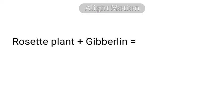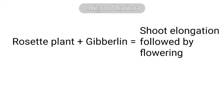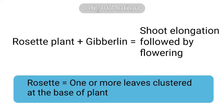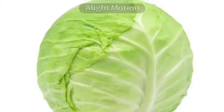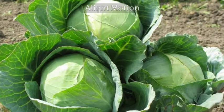The second important effect is that treatment of rosette plants with gibberellin induces sudden shoot elongation followed by flowering. Rosette plants means having one or more leaves clustered tightly at the base of a plant. An example is cabbage, where inter-nodes are very short and the plant is small and round in structure. In cabbage, we can fold a whole leaf.